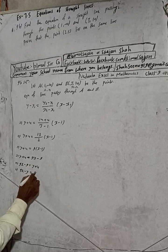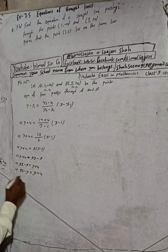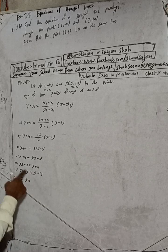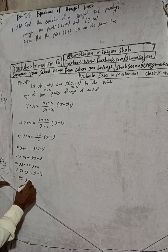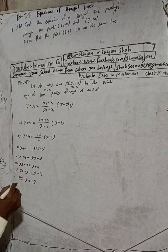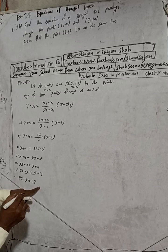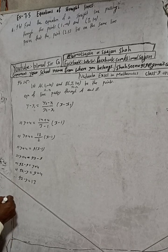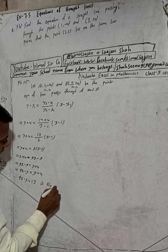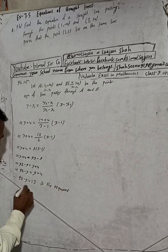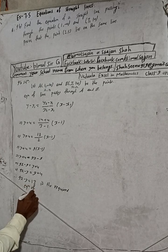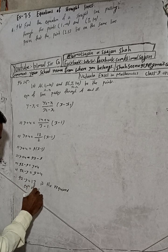Bringing all terms to one side: 9x minus y equals 9 plus 4, which gives 13. Therefore, 9x minus y equals 13 is the required equation of the straight line.